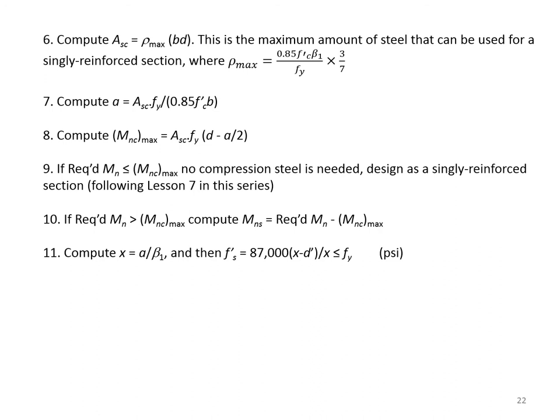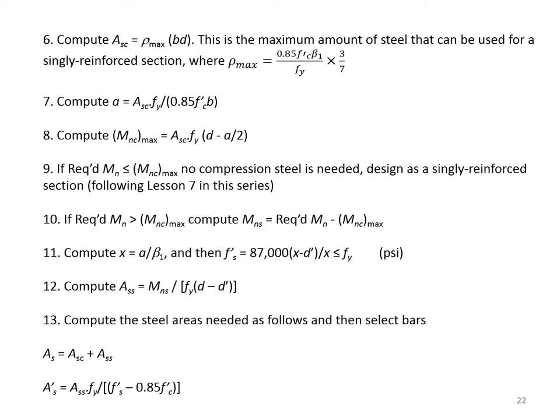Step 11: by knowing M_ns, we compute x and then f'_s as 87,000 psi times (x minus d') divided by x. Step 12: compute A_ss equals M_ns divided by (f_y × (d minus d')). Step 13: compute the steel areas as follows and select appropriate bars. A_s equals A_sc plus A_ss, and A'_s equals A_ss × f_y divided by (f'_s minus 0.85 f'_c).